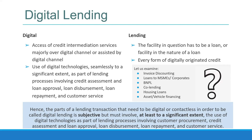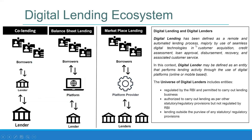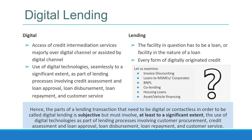So the very first thing here is digital lending. To determine whether lending is digital, two aspects matter — digital and lending — and to what extent is it happening digitally. Digital lending has been defined as a remote and automated lending process, majorly by use of seamless digital technologies in customer acquisition, credit assessment, loan approval, disbursement, and associated customer services.